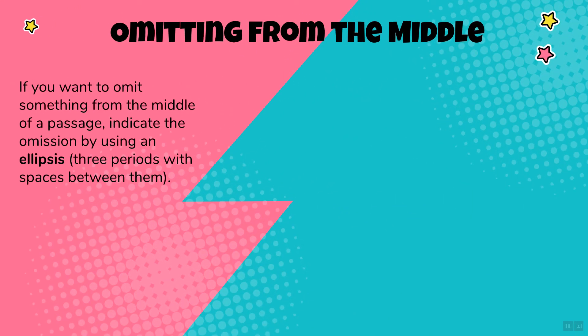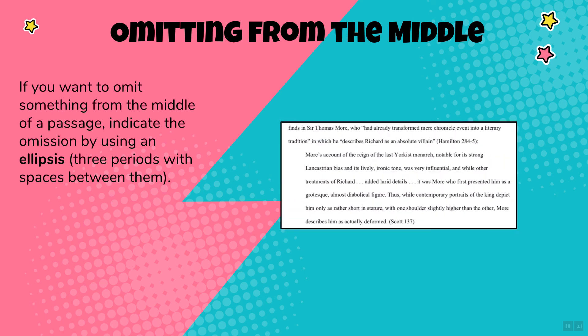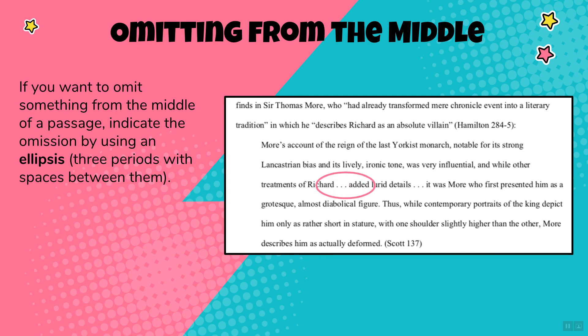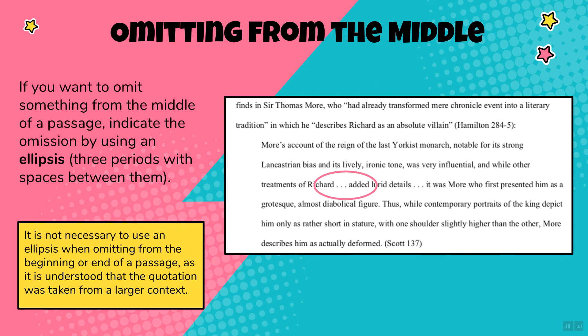One thing that can help is omitting from the middle of a passage. If you want to omit something from the middle, indicate the omission by using an ellipsis — the dot dot dot, or three periods with spaces between them. It is not necessary to use an ellipsis when omitting from the beginning or end of a passage, as it is understood that the quotation was taken from a larger context.